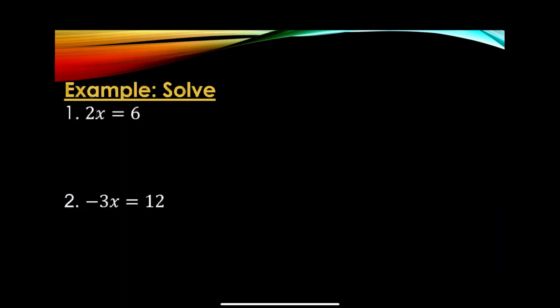Let's start with the first example: 2x = 6. We know that 2 is multiplied by the variable x. We can guess — what number multiplied by 2 gives 6? The answer is 3. But to solve it properly, we divide both sides by the coefficient of x, which is 2. So 2x = 6, divide both sides by 2, and x = 6/2 = 3.